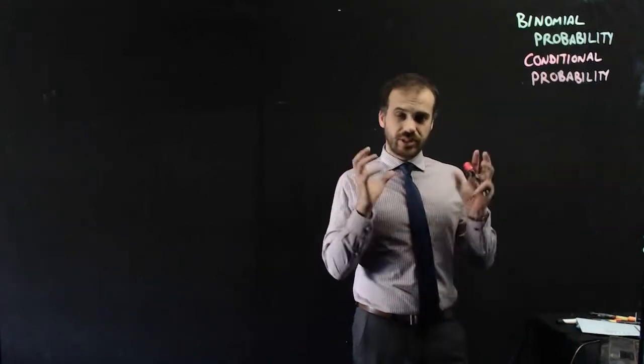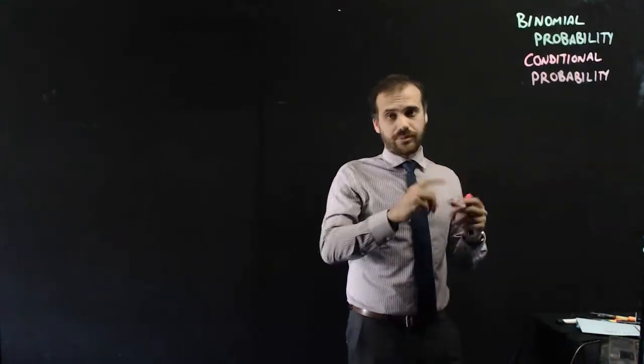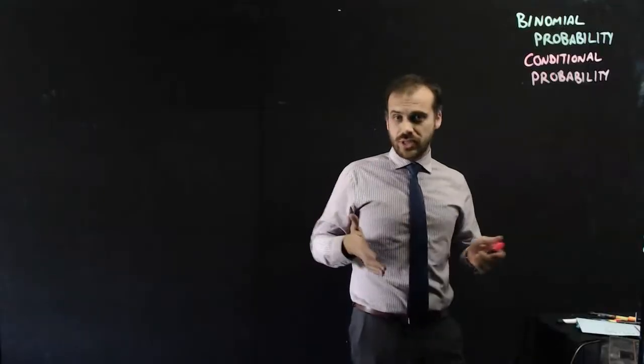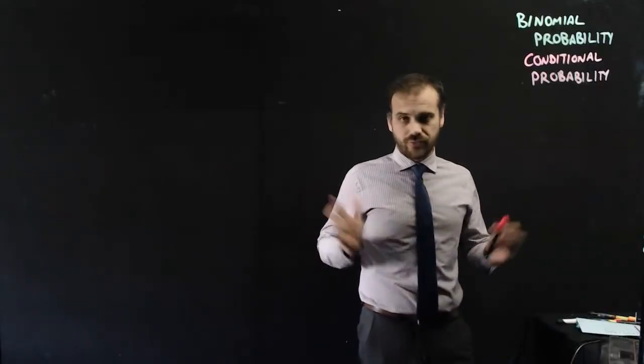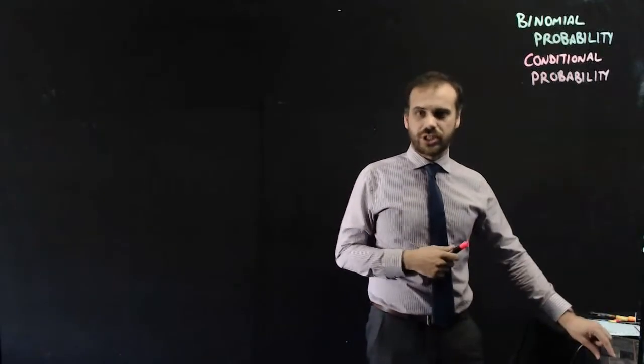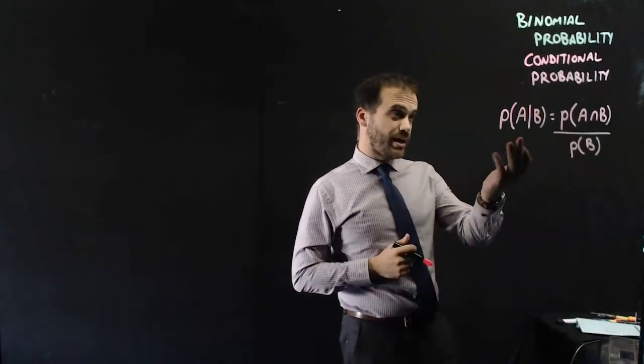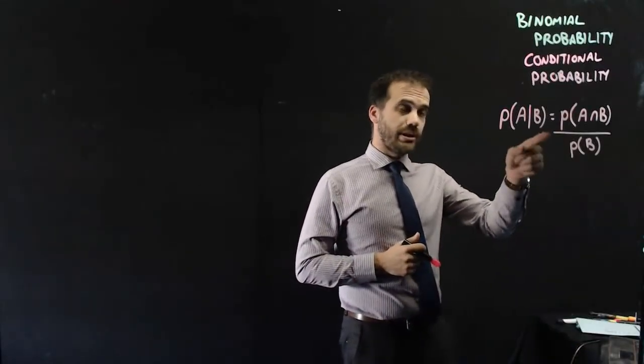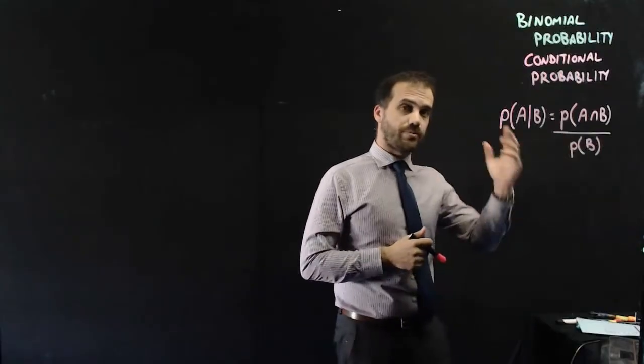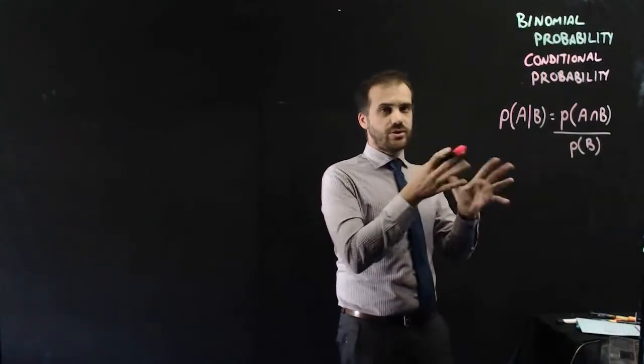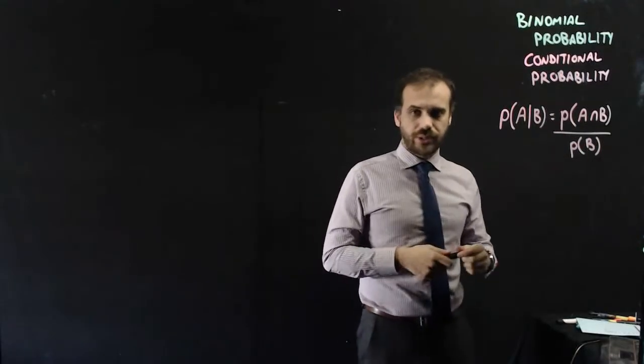So we're going to do binomial probability, but this time we're going to do conditional probability along with it. Now to do that, you're going to need a conditional probability formula, which you'll probably find in a formula sheet somewhere. Probability of A given B is equal to probability of A intersection B over the probability of B. So we're going to use that along with our binomial probability.